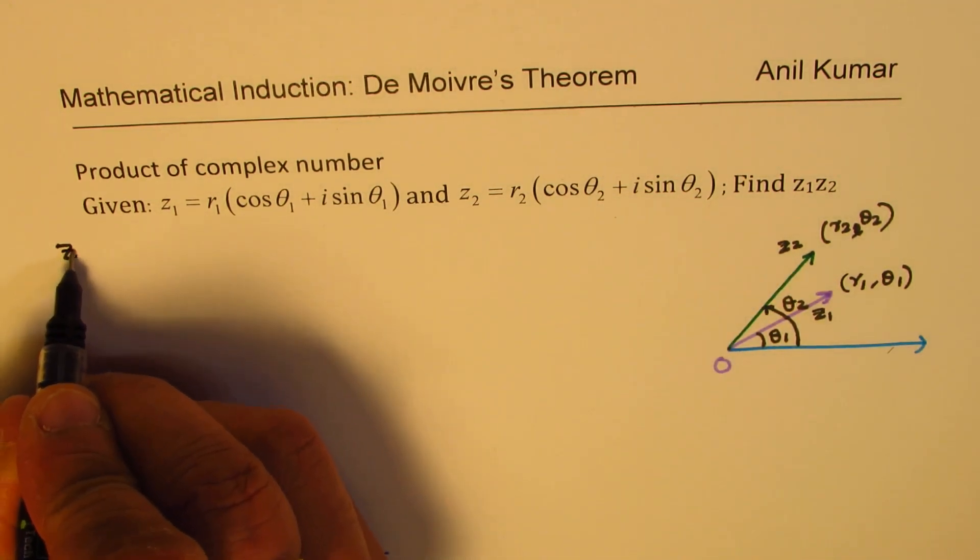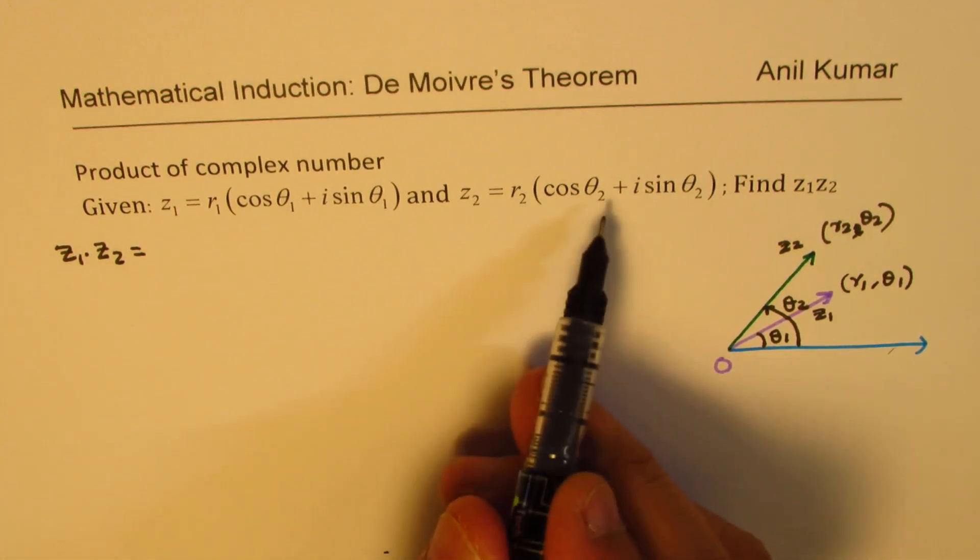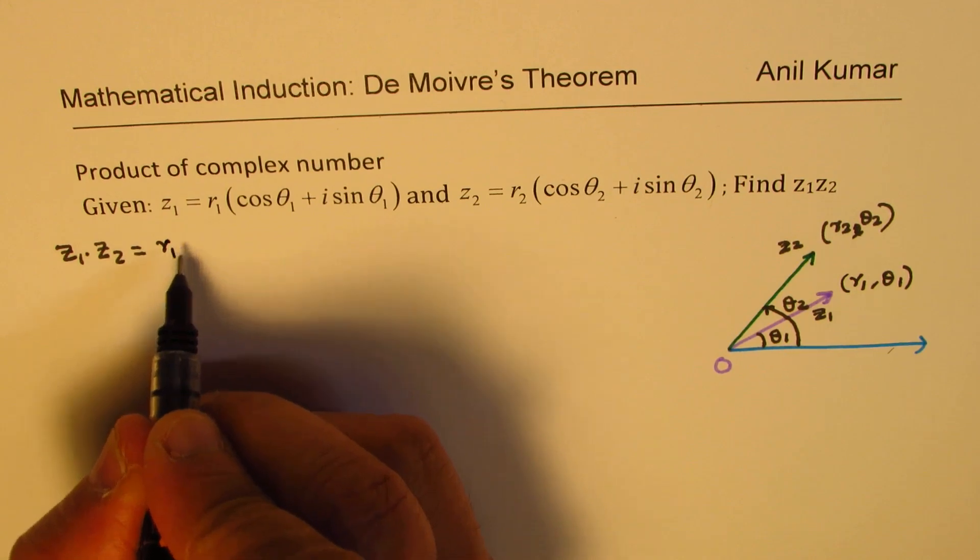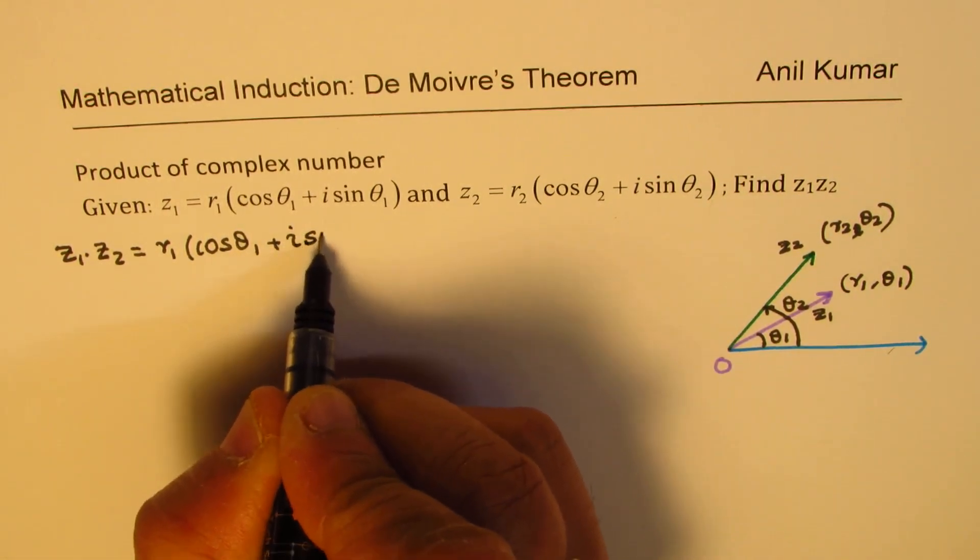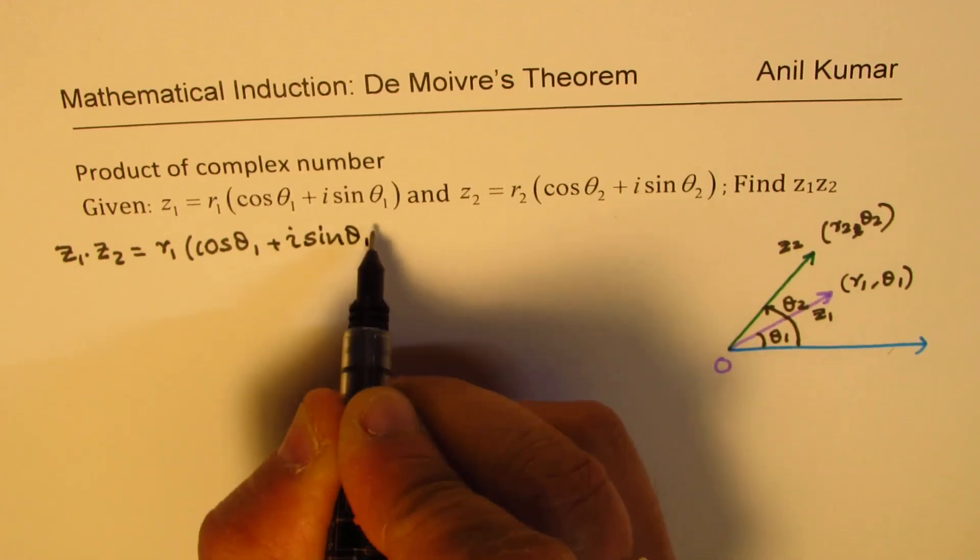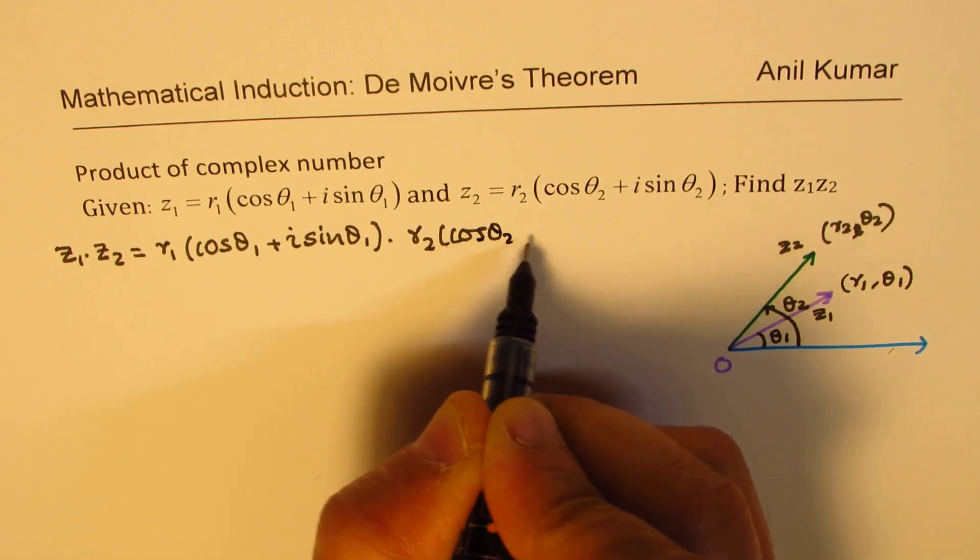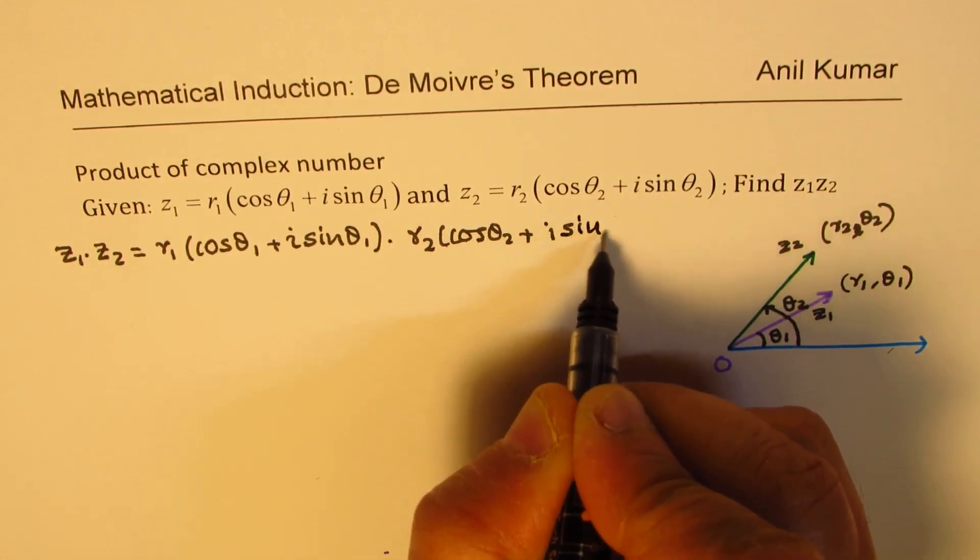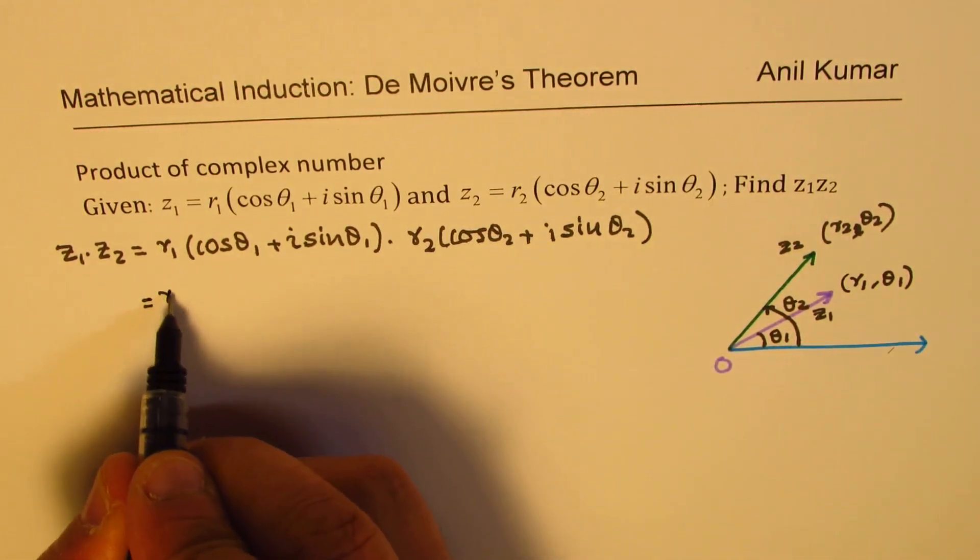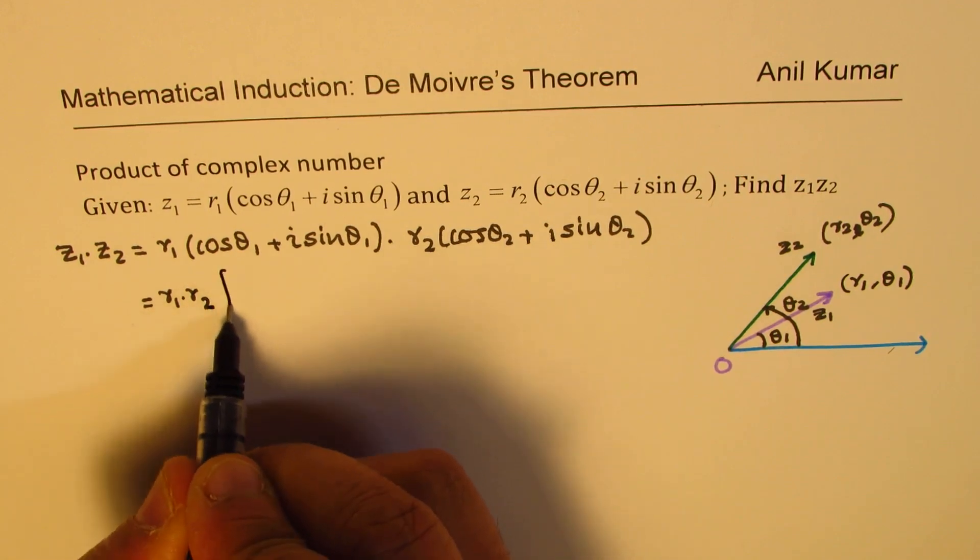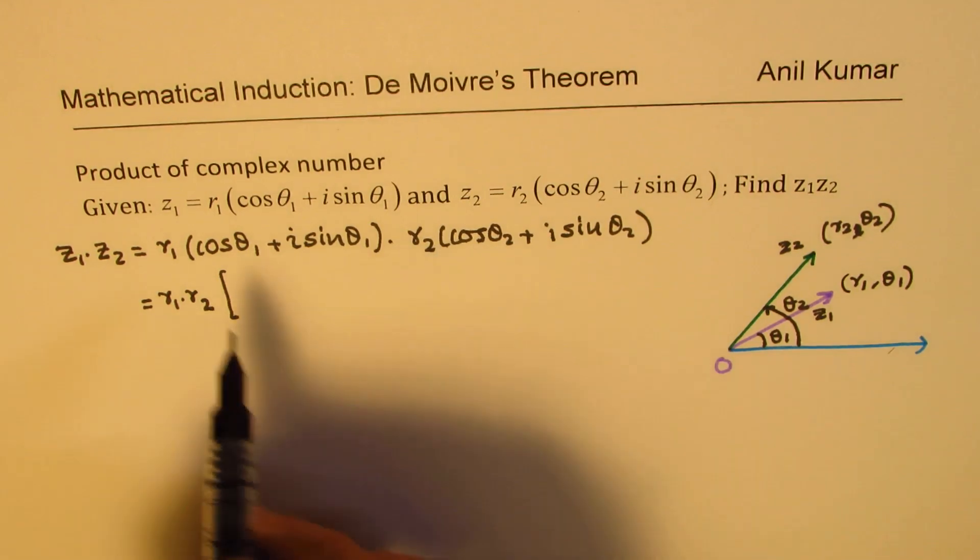We need to find what is z1 times z2. Clearly we have to multiply these, so we get r1(cos θ1 + i sin θ1) times r2(cos θ2 + i sin θ2). When you multiply you get product of r1 and r2. Within the brackets we'll do product of the cosines and the sines.